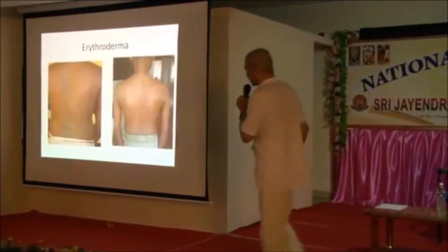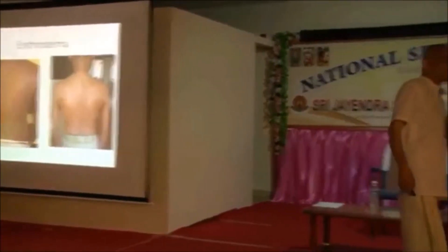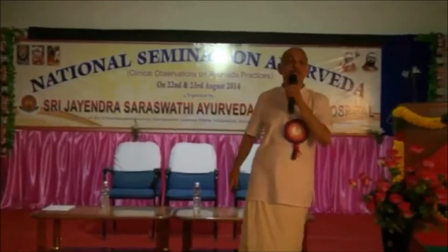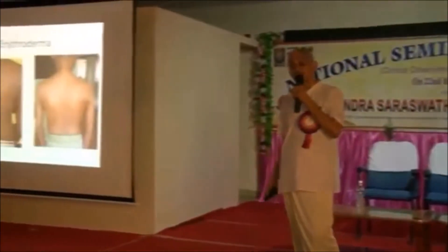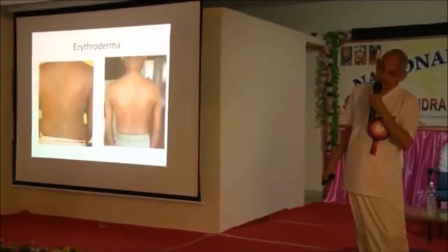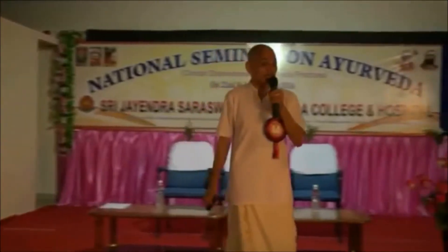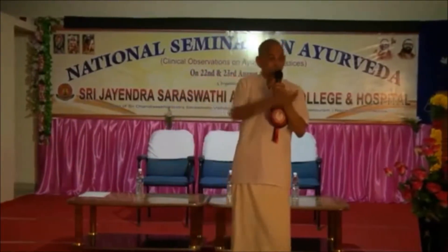Now this is an erythroderma case — actually a psoriatic erythroderma. There are two types of erythroderma: psoriatic erythroderma and eczematous erythroderma. Erythroderma is a complicated stage of eczema, lichen planus, and psoriasis. The medicines used in psoriasis are not applicable to eczema, because eczema is an allergic disease and we should not irritate the skin, whereas in psoriasis we should irritate to remove the scale.